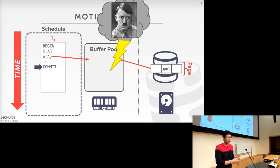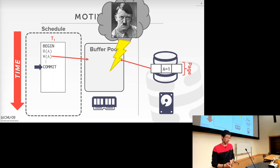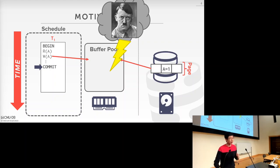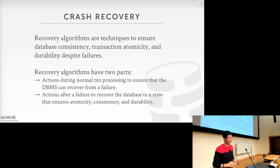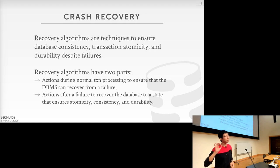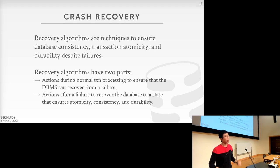So that's exactly what logging and recovery are going to deal with. Formally speaking, logging and recovery mechanisms are techniques to ensure the consistency, atomicity, as well as the durability of the database system, especially during failures. At a high level, there are two parts: the first part is called the logging part — when the database system is running normally and executing transactions, it records certain metadata or changes made by these transactions at runtime, sometimes in memory and sometimes on disk.